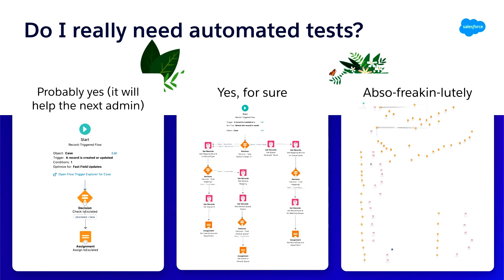The second question you may ask is: do I really need automated tests? And my answer is yes. Even if you only have, say, two nodes in your flow, you still want automated tests because this is a way for you to capture the input. So the next time you come back and want to test, you don't have to remember what those inputs are — you can just run it. And it's also an easy way for other admins to see what the expected inputs and outputs are, making it a lot easier to understand what the flow is doing.